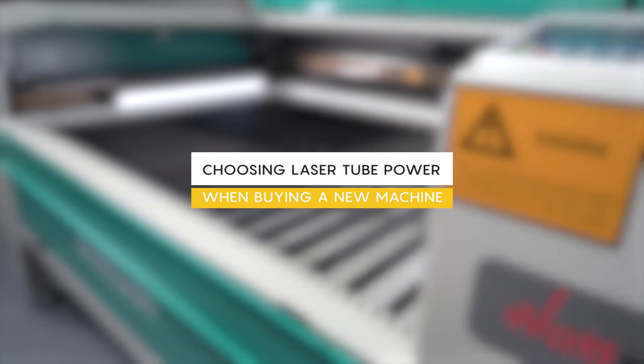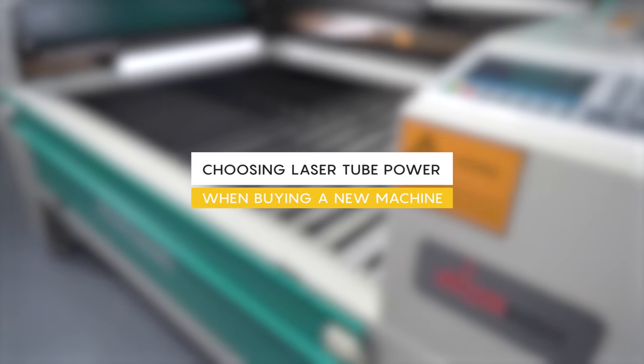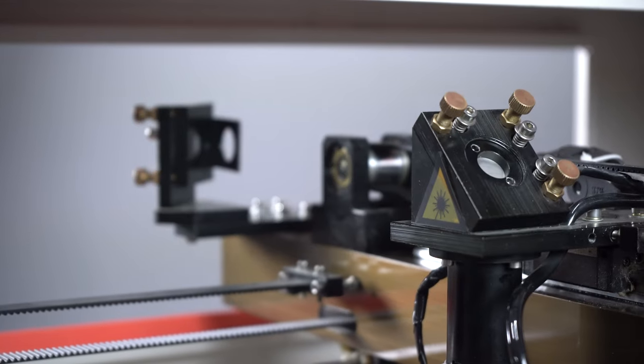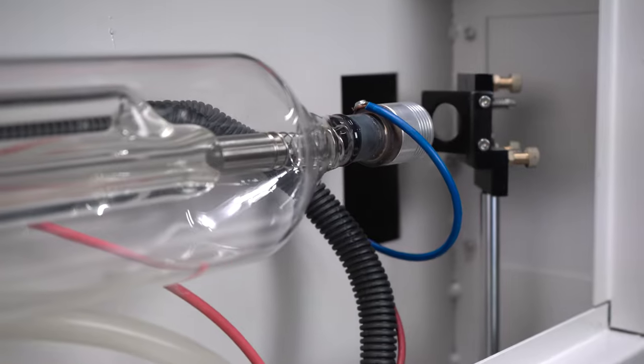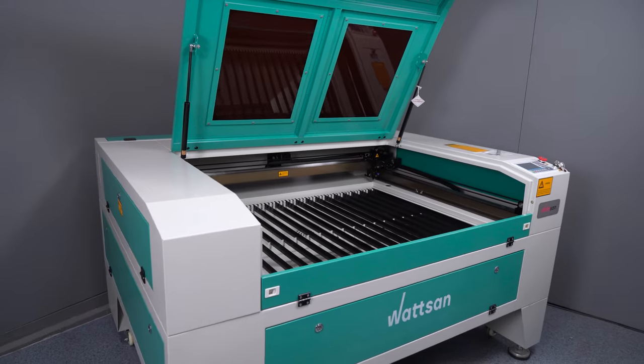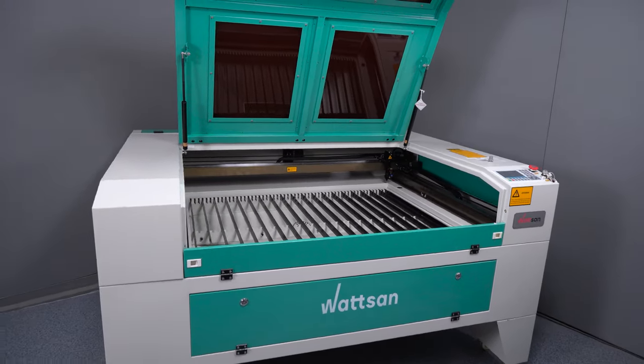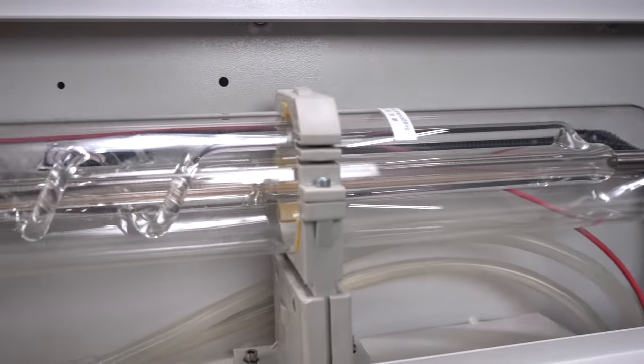Choosing laser tube power when buying a new machine. When you buy a new machine, you choose the power of the laser tube, i.e. you are essentially choosing the power of the machine. As a rule, machines are equipped with tubes that are already best suited to the specific machine model.